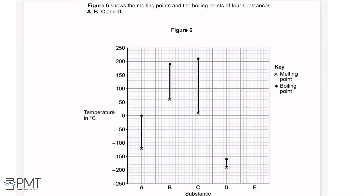Figure 6 shows the melting points and boiling points of four substances A, B, C, and D. Melting points are marked with a cross and boiling points with a filled circle, plotted against temperature in °C. For example, substance A has a boiling point of 0°C. The question asks which substance is a liquid over the greatest temperature range — a liquid exists between its melting point and boiling point, so we want the biggest difference between the two. The answer is C because it has the longest line.